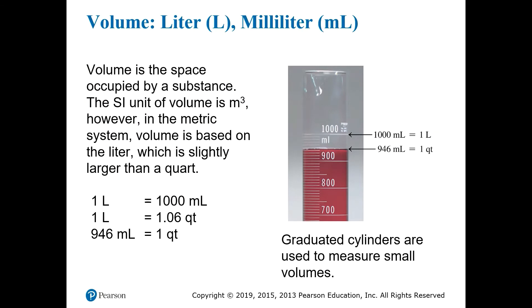Now let's take a look at some of these units in a little more detail. The metric unit of volume is the liter, abbreviated capital L, and in a laboratory, it's often useful to take an even smaller unit called the milliliter, abbreviated mL. You may want to remember that one liter is a thousand milliliters. We also see the relationship here between liters and quarts, but this is much less straightforward and not really worth memorizing.